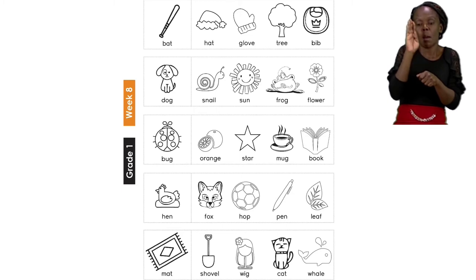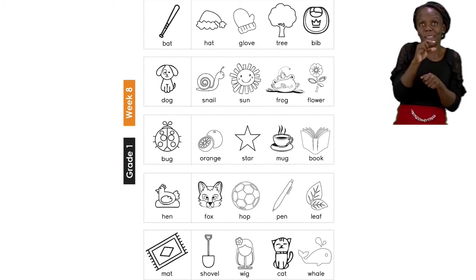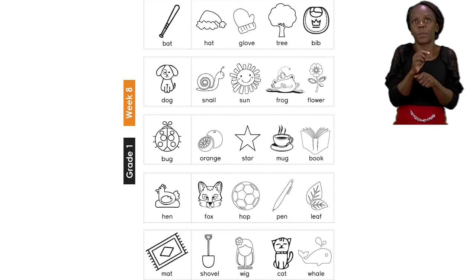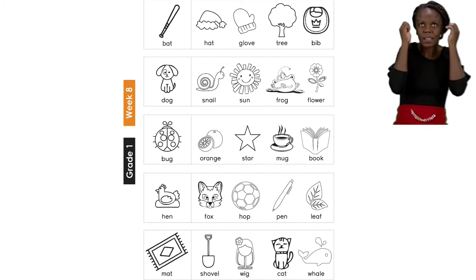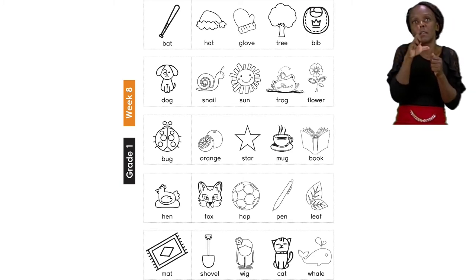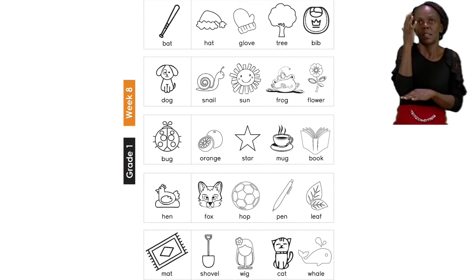So our first word is bat. And we need to take a look at the other words to see which one rhymes. Is it the word hat? Or glove? Or tree? Or bib?